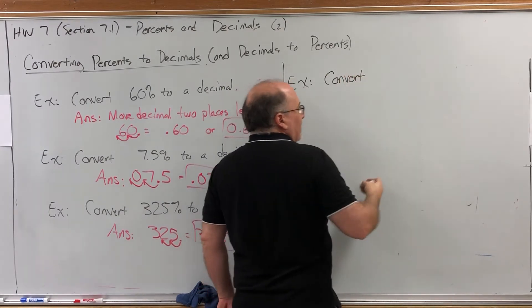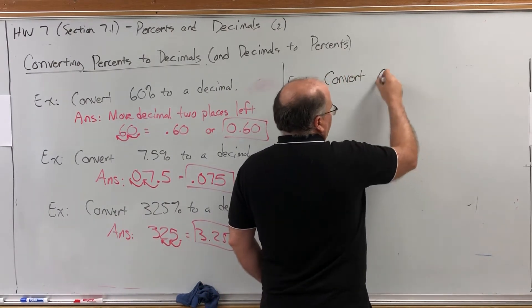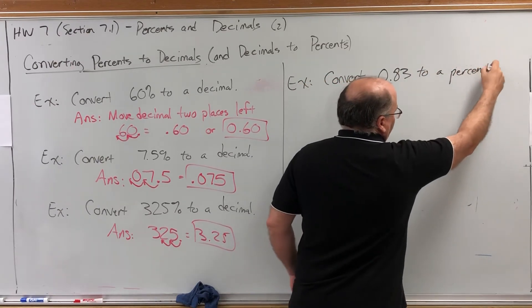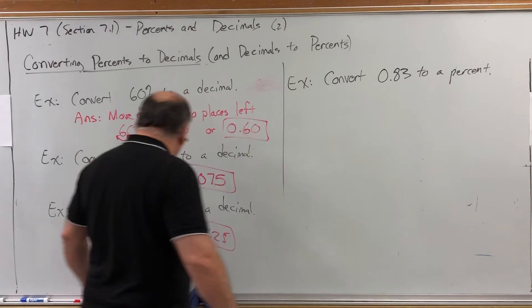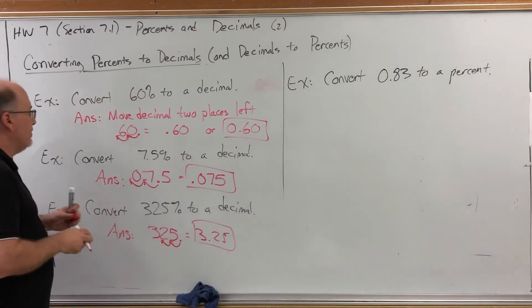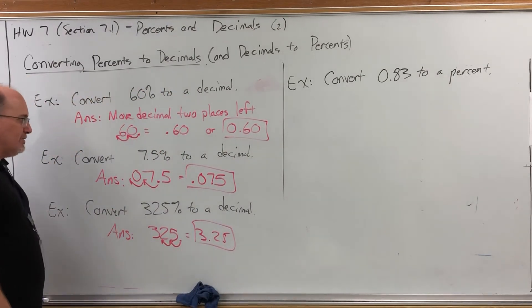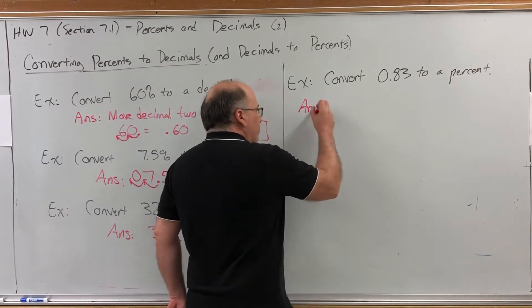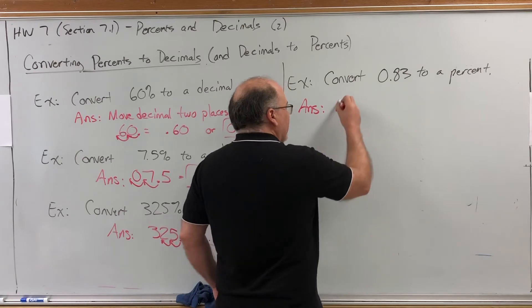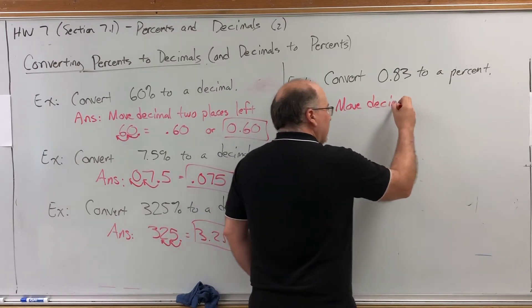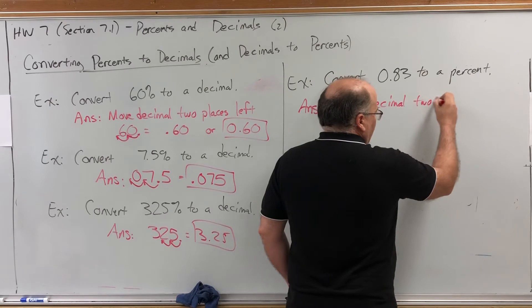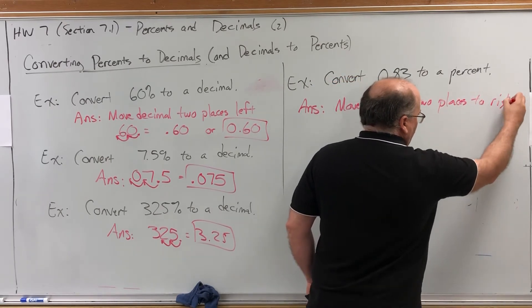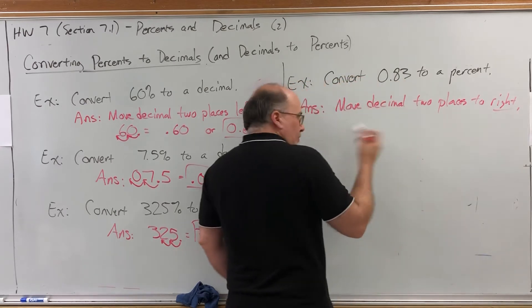For example, let's say you want to convert 0.83 to a percent. Well, it's just as easy. When converting a percent to a decimal, you move the decimal place two places to the left. When you're converting a decimal back to a percent, move the decimal two places to the right. And then put the percent sign on.